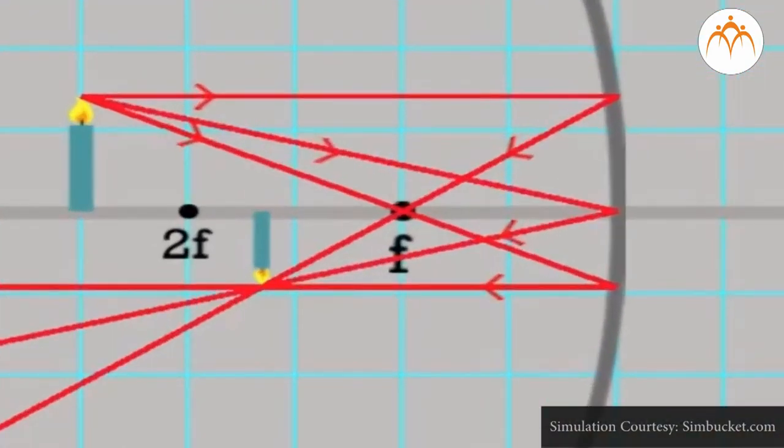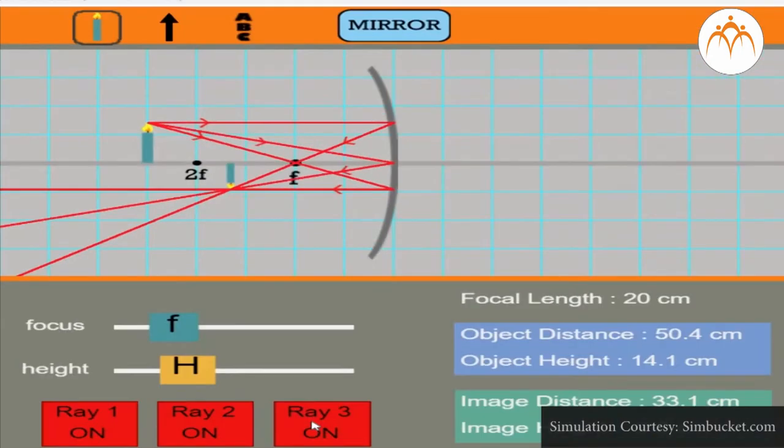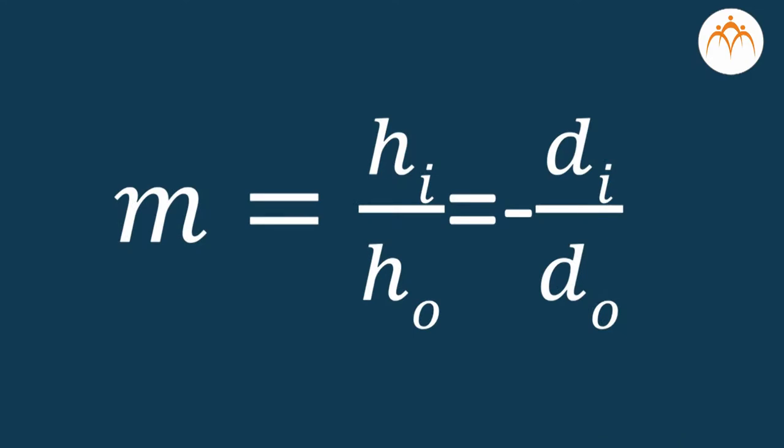The magnification equation relates the ratio of the image distance and the object distance to the ratio of the image height hI and the object height hO. The magnification equation is stated as follows: m is equal to hI upon hO which is equal to minus dI upon dO.